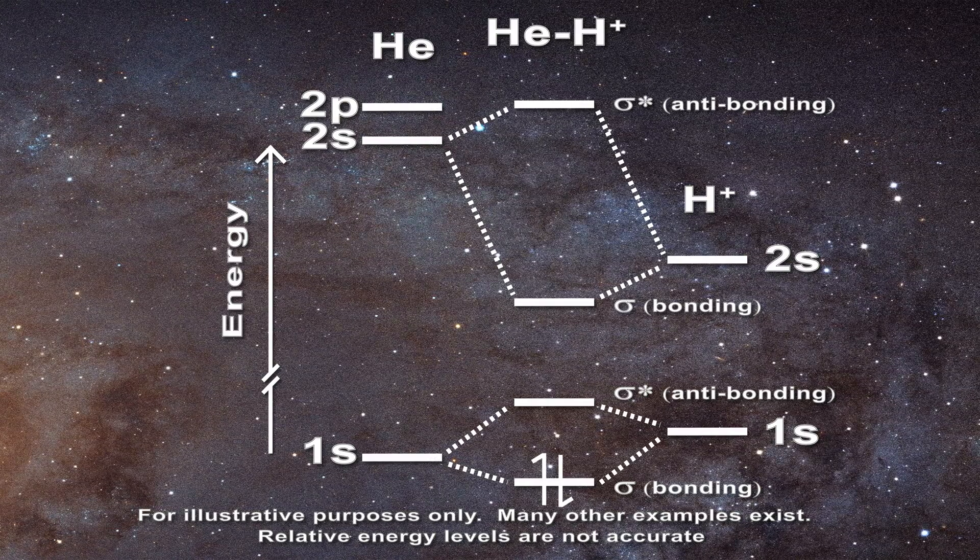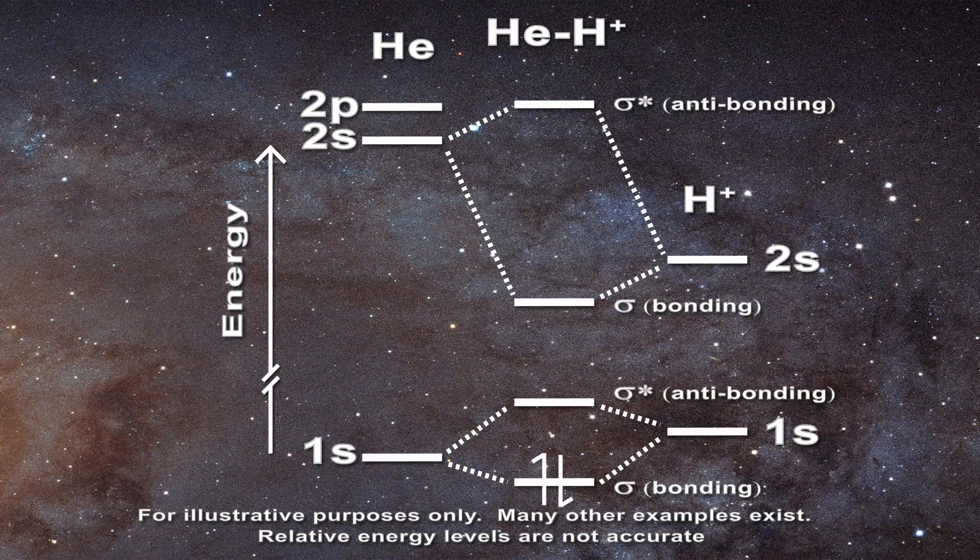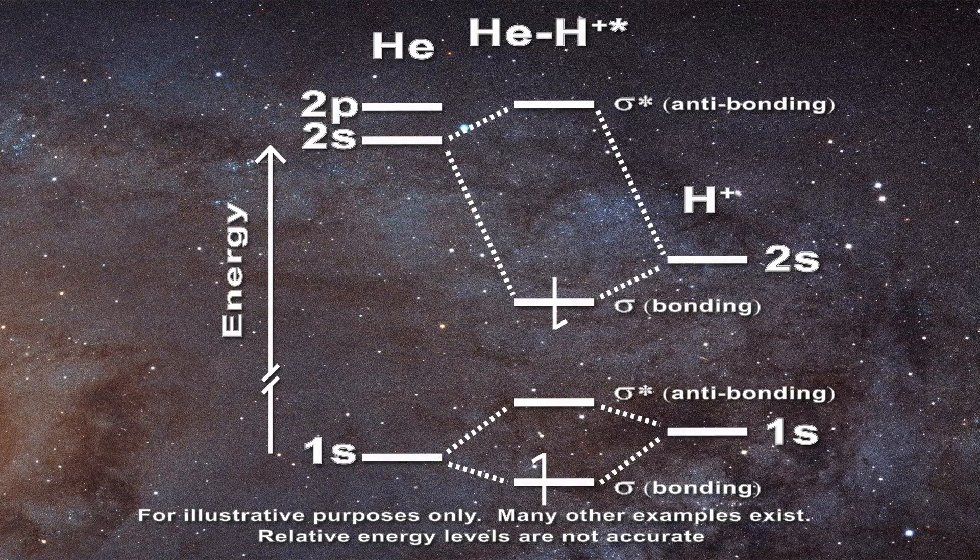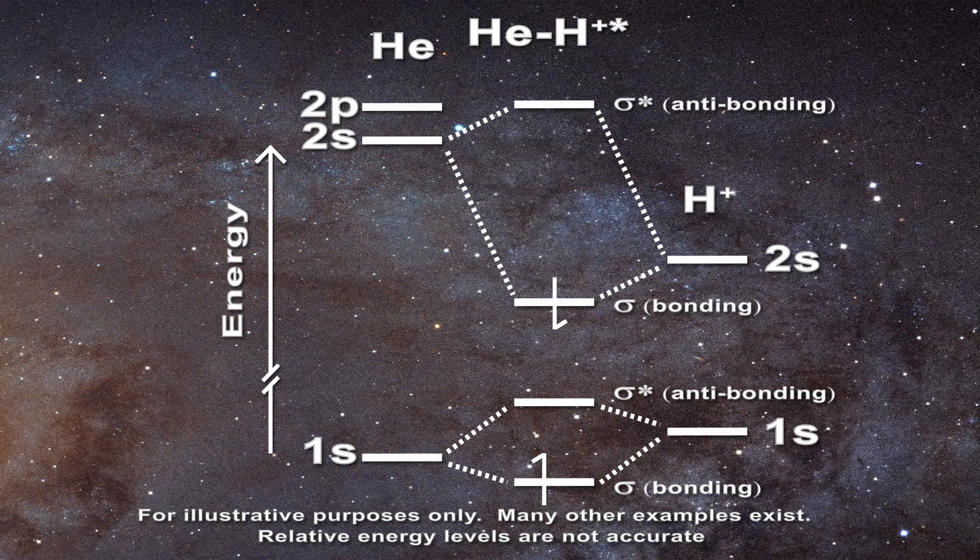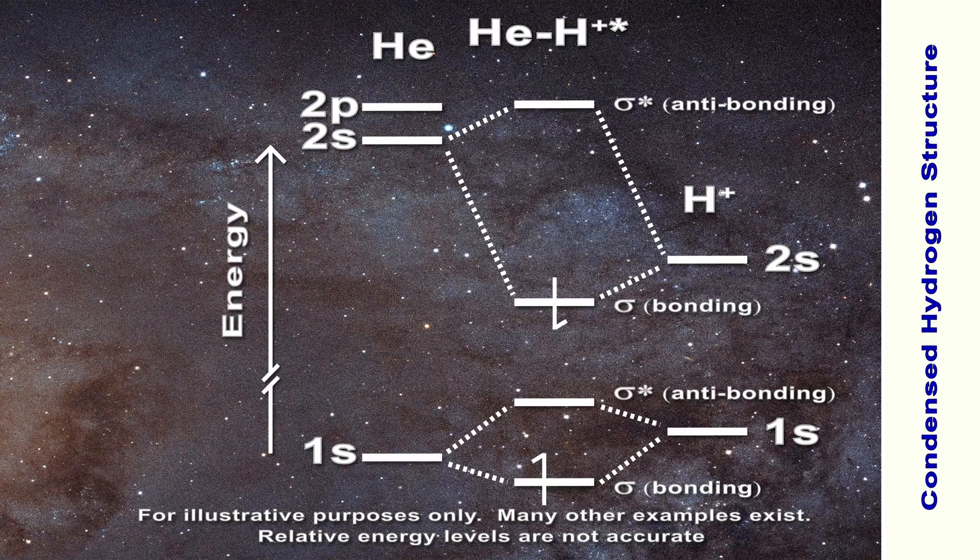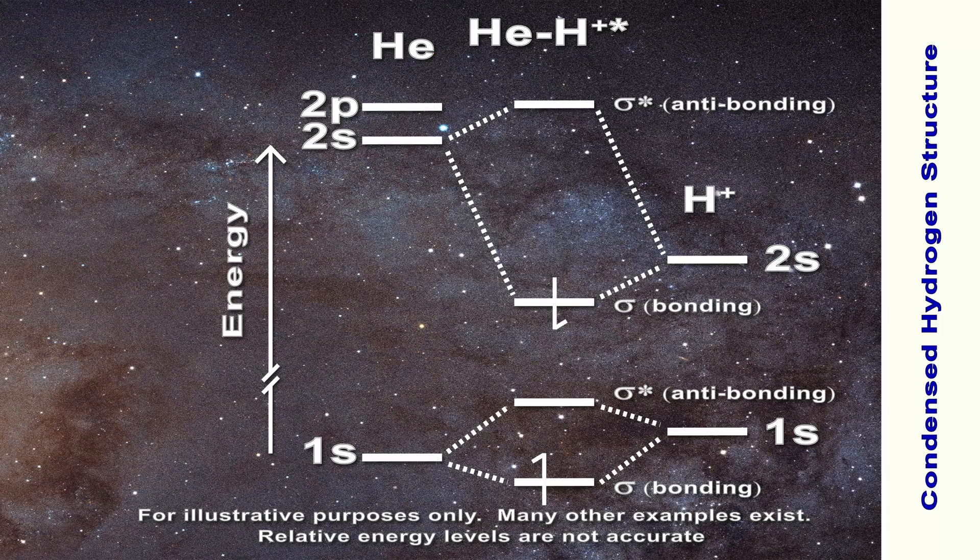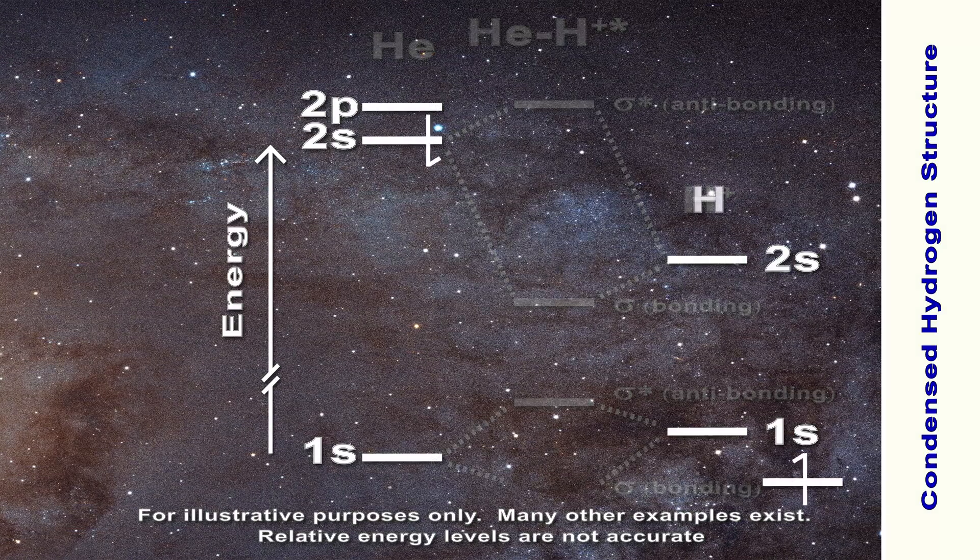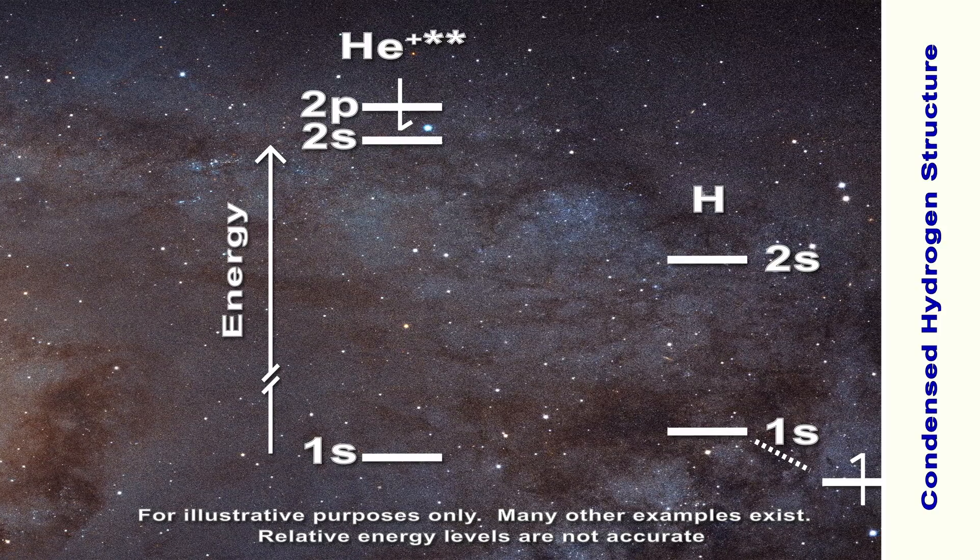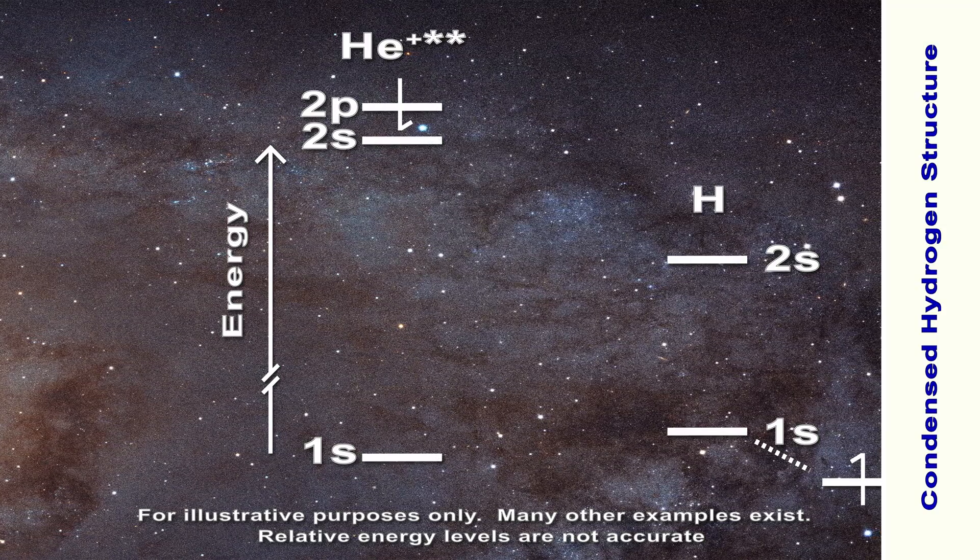As a result what if before the relaxation can take place the newly formed helium hydride cation encounters a condensed hydrogen structure. One could envision that the proton acts as an electron thief. It could steal the electron in the lower energy level and leave the helium and condense with the condensed hydrogen structure.